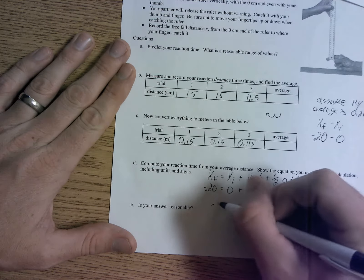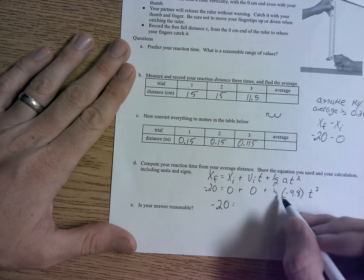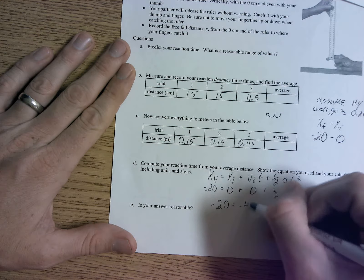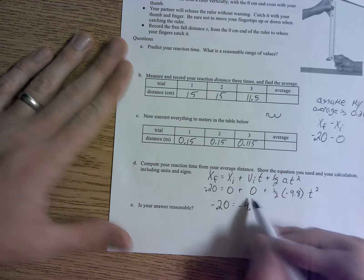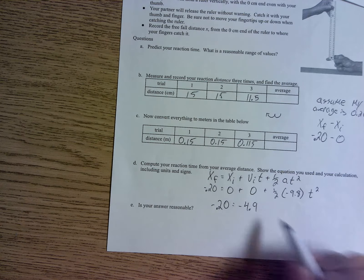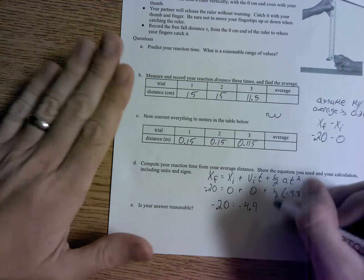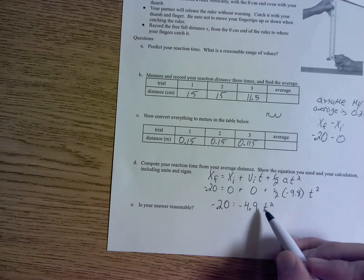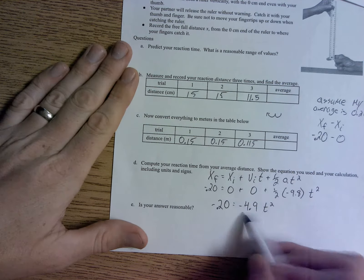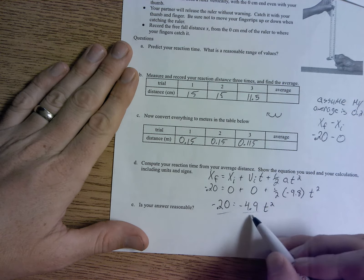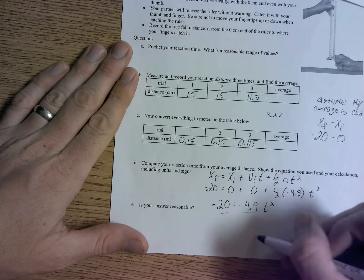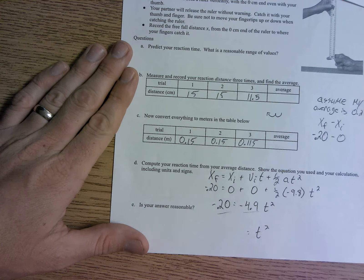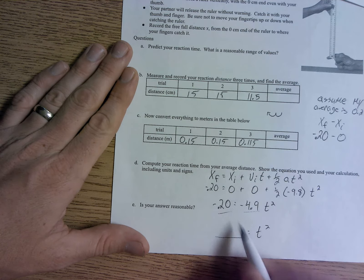We're going to have negative 0.20 is equal to, well how about half of negative 9.8. Half times negative 9.8, negative 4.9. The 0 plus 0, just leave it alone. Negative 4.9 times t squared, it's multiplying. So we're going to have to divide both sides by that number, and then once we do, we'll have t squared is equal to whatever that is. We'll get an answer for whatever this is.